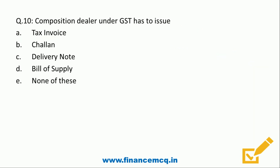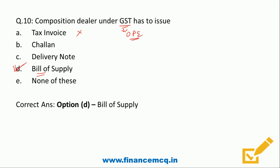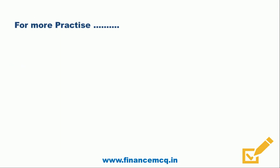Question ten: a composition dealer under GST has to issue — option A: tax invoice, option B: challan, option C: delivery note, option D: bill of supply, option E: none of these. The correct answer is option D. A composition dealer cannot issue a tax invoice because they have to pay GST from their own pocket. So the correct option is bill of supply.